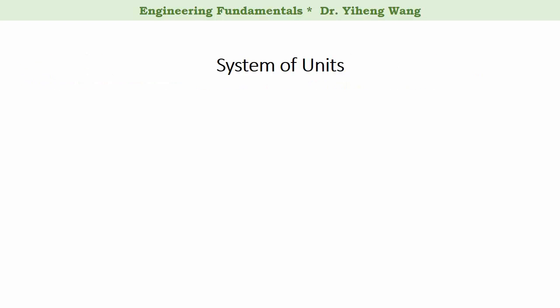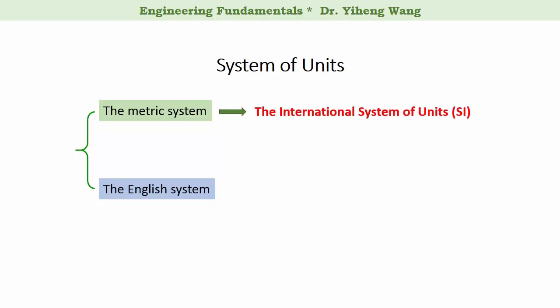In general, the unit systems used in the United States can be divided into two major categories: the metric system based on meter, and the English system based on foot and pound. The most important metric unit system is the International System of Units, also known as the SI unit system.